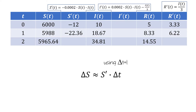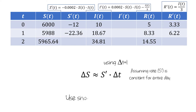This was just an approximation because when we did this, we were assuming that the rate s prime is constant for the entire day. But we weren't required to use delta t of one day, so a way to improve the accuracy of our predictions is to use shorter time intervals.